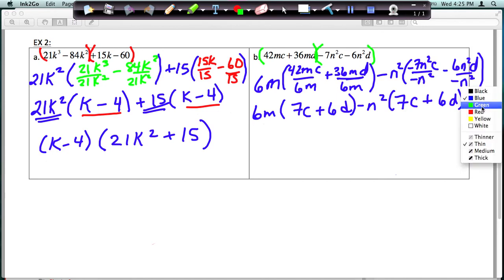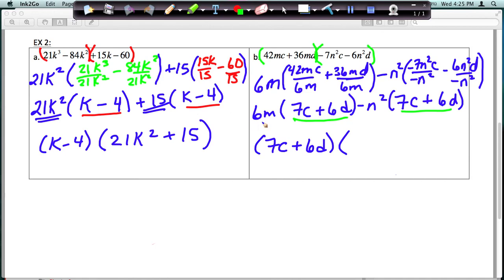So now you should see that I have the factor 7c plus 6d in common. So that's what I'm going to pull out in front, and then we're going to write what we have left. So when I pull the 7c plus 6d out, over here I'm left with a 6m, and over here I'm left with a negative n squared. And that's factored.